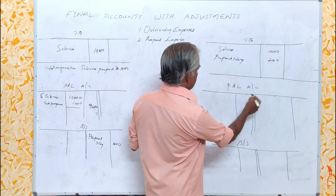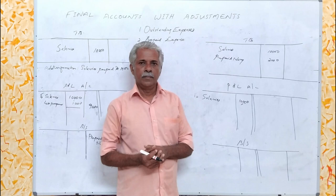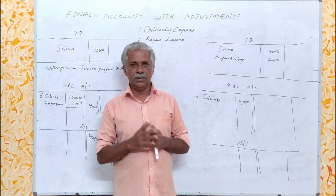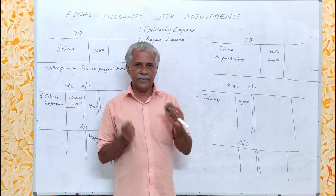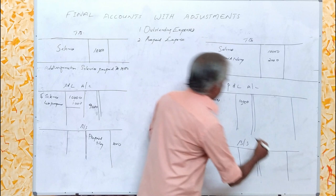In the profit and loss account on the debit side, write salaries rupees 10,000. Salaries prepaid is given in the trial balance as a recorded item and will appear only at one place. Any prepaid expense represents an asset, therefore it must be shown on the asset side of the balance sheet as prepaid salary rupees 2,000.